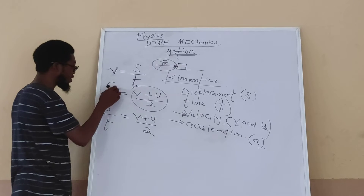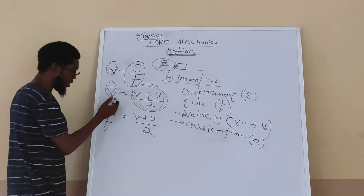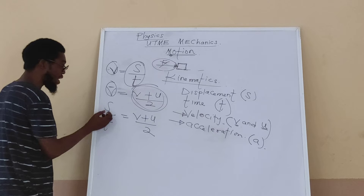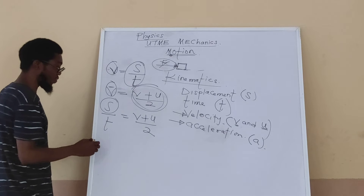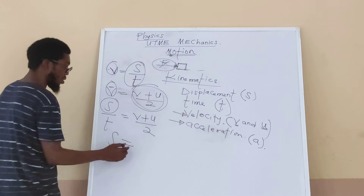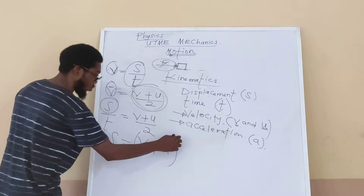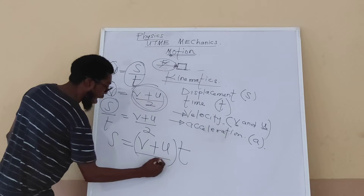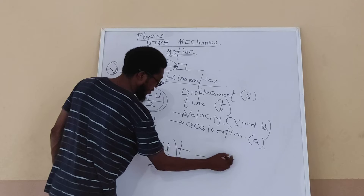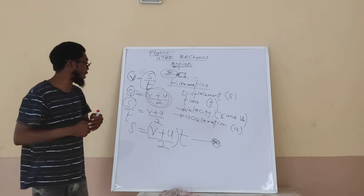Since displacement over time equals (v + u) / 2, I cross-multiply and make displacement the subject of the formula: s = (v + u) / 2 × t. This is one of the most important equations we use to solve problems under kinematics.